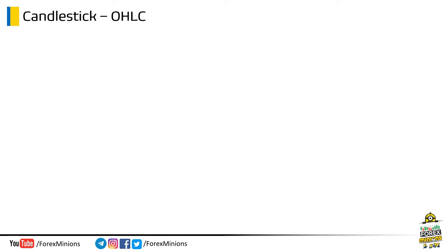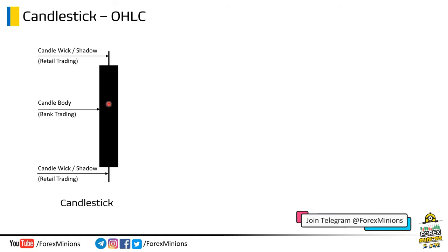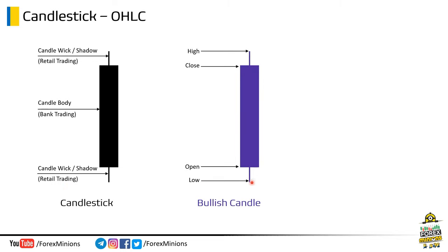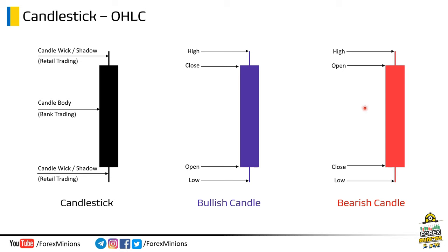Every trader must have knowledge about the OHLC values of a candlestick and their importance. Note that every candlestick's body represents bank trading or actual trading volume. On the other hand, the wick or shadow of a candlestick represents retail trader volume. In a bullish market, the low of the candle will be on the downside, because the London session posts the low of the day. Similarly, these are the open, high, low, and close values of bearish candlesticks. Remember: the London session will manipulate the high-side liquidity in a bearish market. I hope now you can observe and analyze the market in better ways.